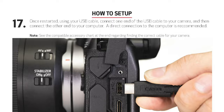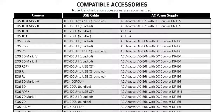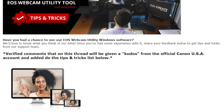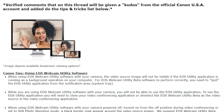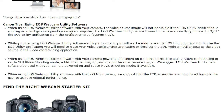On Canon's USA website, we have a get started guide which shows a step-by-step setup to get you going, including information on compatible USB cables and AC adapters. Also, Canon USA hosts a user community for EOS webcam utility and our support agents will help answer your questions as much as possible. The links to these pages are provided in the description below, so please check them out.